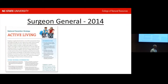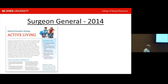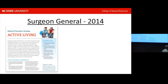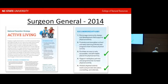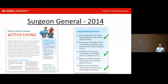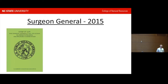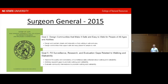The Surgeon General in 2014 released a preventive strategies plan for active living with five recommendations, including encouraging community design to facilitate active living, facilitating access to places for active living, and evaluating activity and environments. In 2015, the Surgeon General issued a call to action for walkable communities and increased walking, again with five goals — including designing communities that promote active living and filling the surveillance and evaluation void.